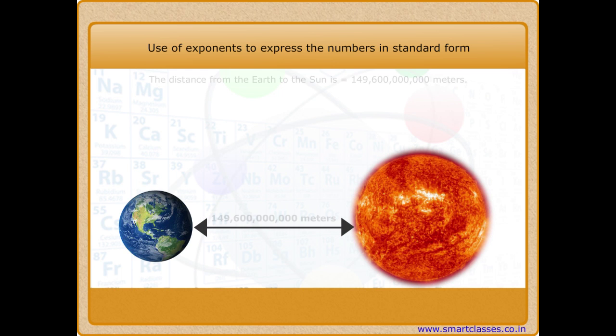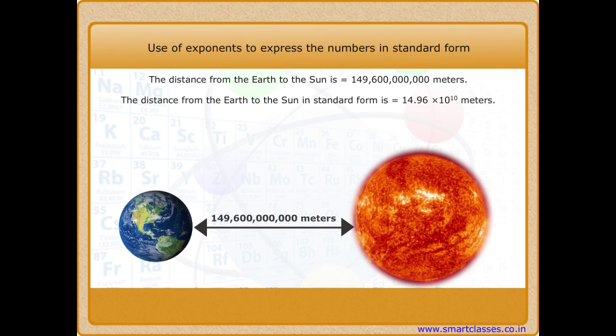For example, the distance from the Earth to the Sun is 149,600,000,000 meters. Thus, in standard form, we may write the distance from the Earth to the Sun as 14.96 times 10 raised to power 10 meters.